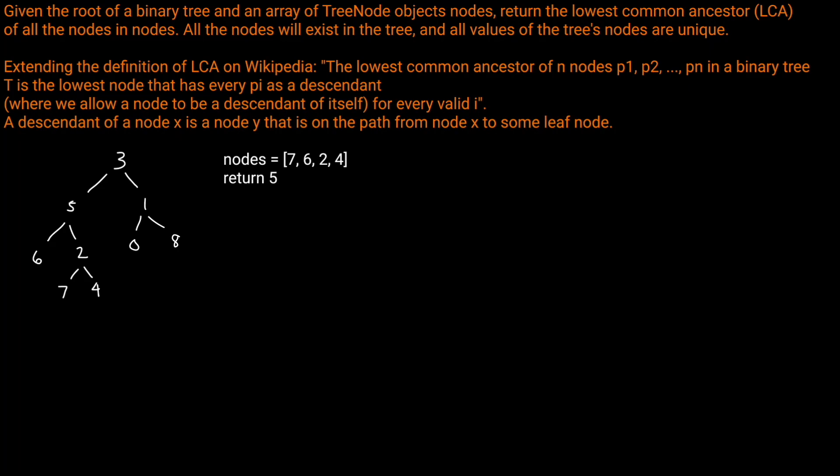All the nodes will exist in the tree, and the values of the tree's nodes are unique. Extending the definition of LCA on Wikipedia, the lowest common ancestor of n nodes P1, P2, ... PN in a binary tree T is the lowest node that has every PI as a descendant, where a node is allowed to be a descendant of itself. A descendant of a node X is a node Y that is on the path from node X to some leaf node.